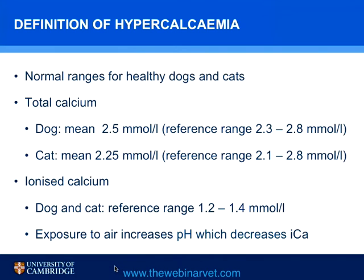Reference ranges for healthy cats and dogs suggest that total calcium in the dog varies between 2.3 and 2.8 millimoles per liter, and in the cat from 2.1 to 2.8. The mean calcium concentration is obviously within that range. Ionized calcium has a reference range from 1.2 to 1.4 millimoles per liter, which is approximately half of the total calcium. Ionized calcium does vary, and it is worthwhile trying to get it measured as soon as possible following collection of the blood sample.